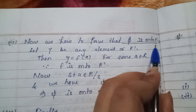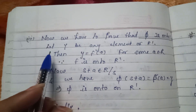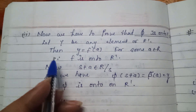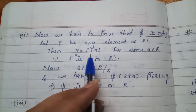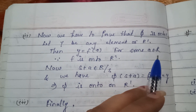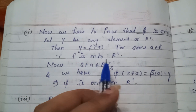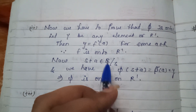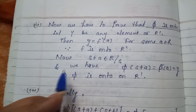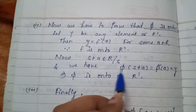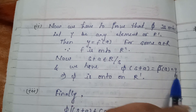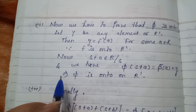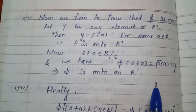Now we have to prove that phi is onto R'. Let Y be any element of R'. Then Y = F(A) for some A belonging to R, since F is onto R'. Now S+A belongs to R/S, and we have phi(S+A) = F(A) = Y, which implies that phi is onto R'.